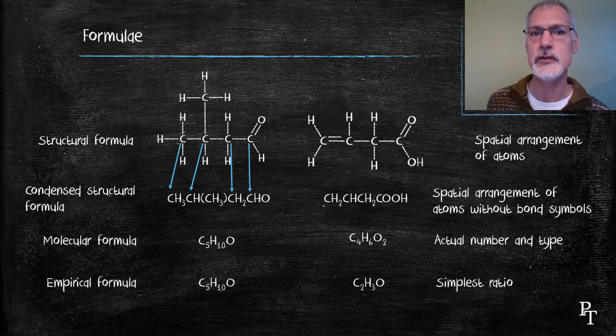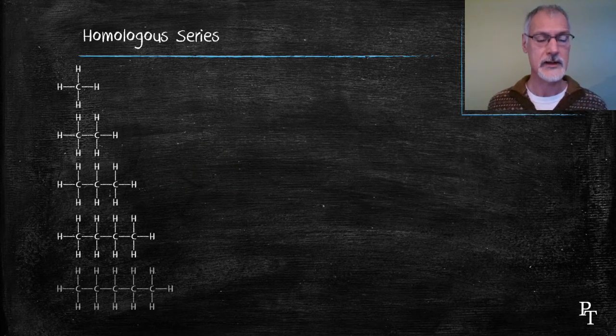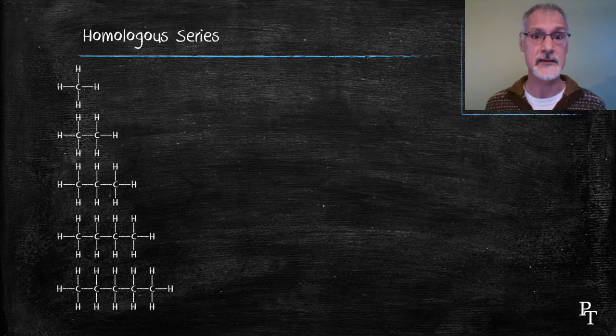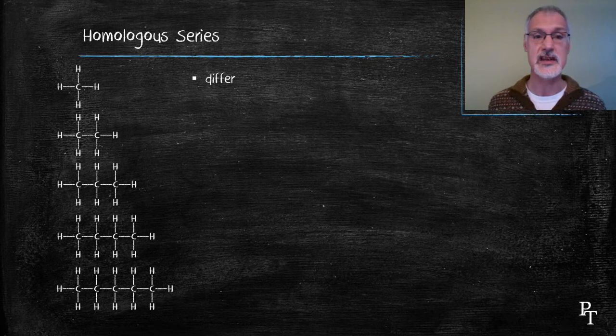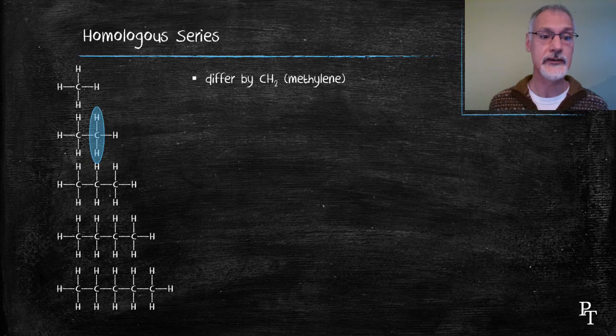Organic chemicals can be put together in series or families. And this is called the alkane family. What I've shown here in the alkanes is a series of them, one following the other. And you'll notice that they differ by just a CH2 unit or methylene unit. This is what we define sometimes as a homologous series.